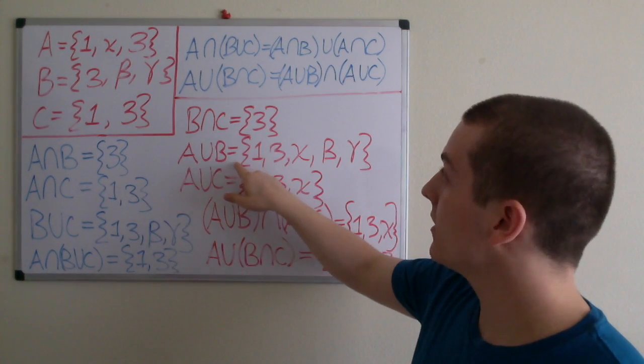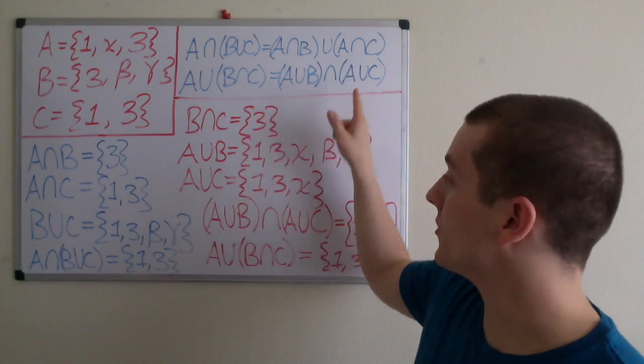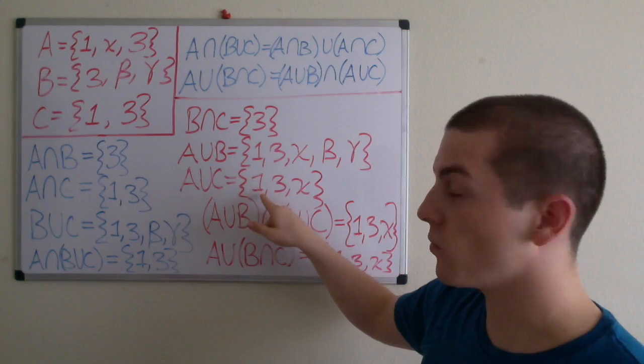And then A union B equals 1, 3, x, beta, gamma. And A union C equals the set containing elements 1, 3, and x.